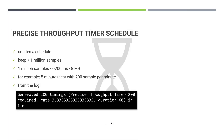It's very important to understand how it works. When you add this Precise Throughput Timer, first it will create a schedule and keep it in heap memory. This schedule creation works well if there are less than 1 million samples in your test plan. With 1 million samples, it will generate the schedule within 200 milliseconds and occupy around 8 MB of your heap — this is the official calculation.